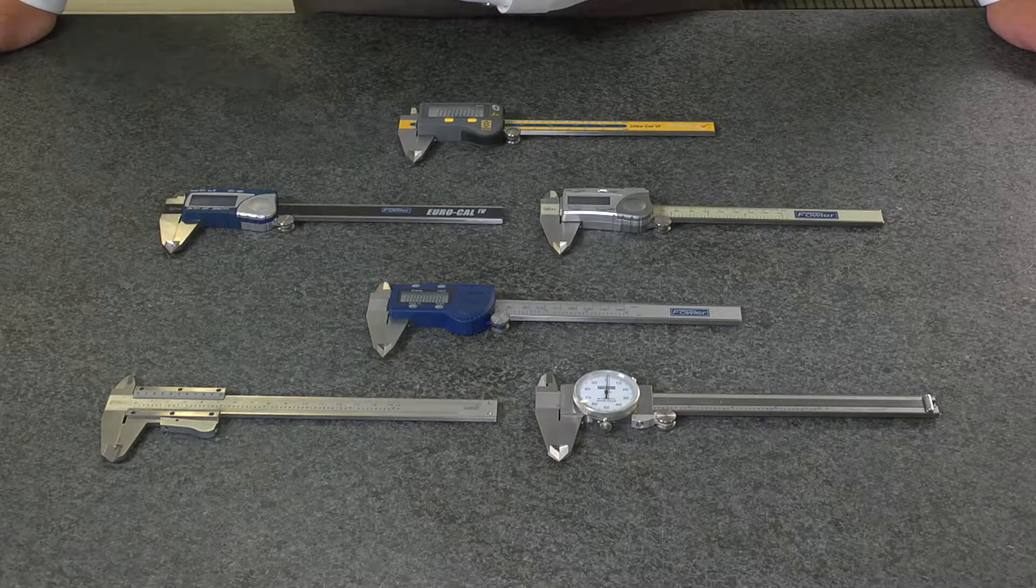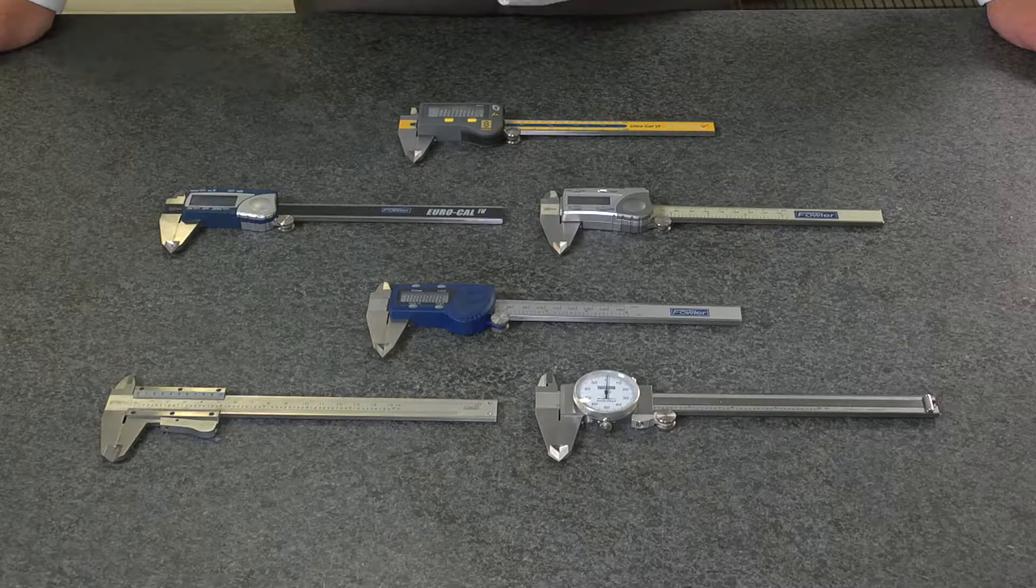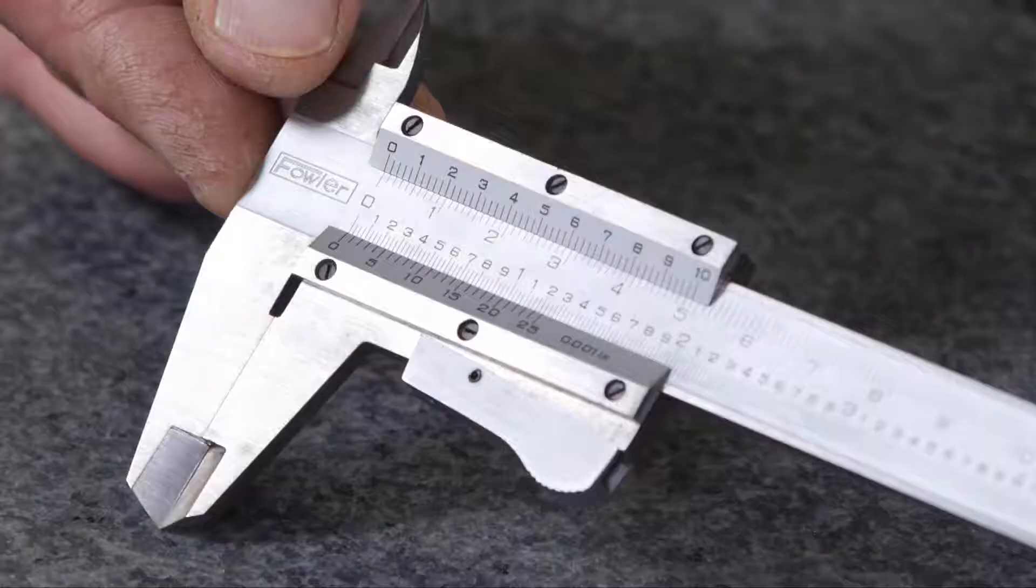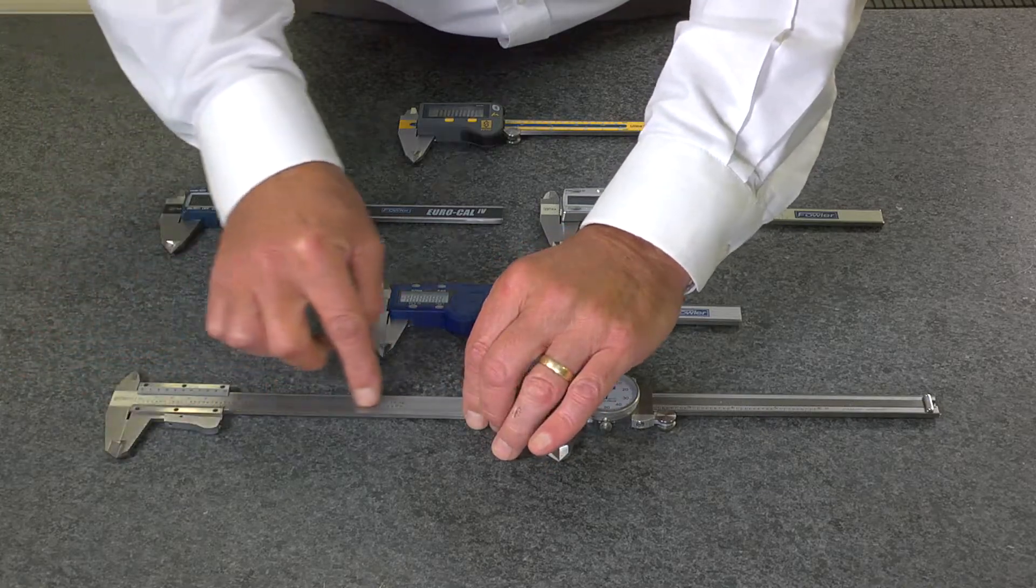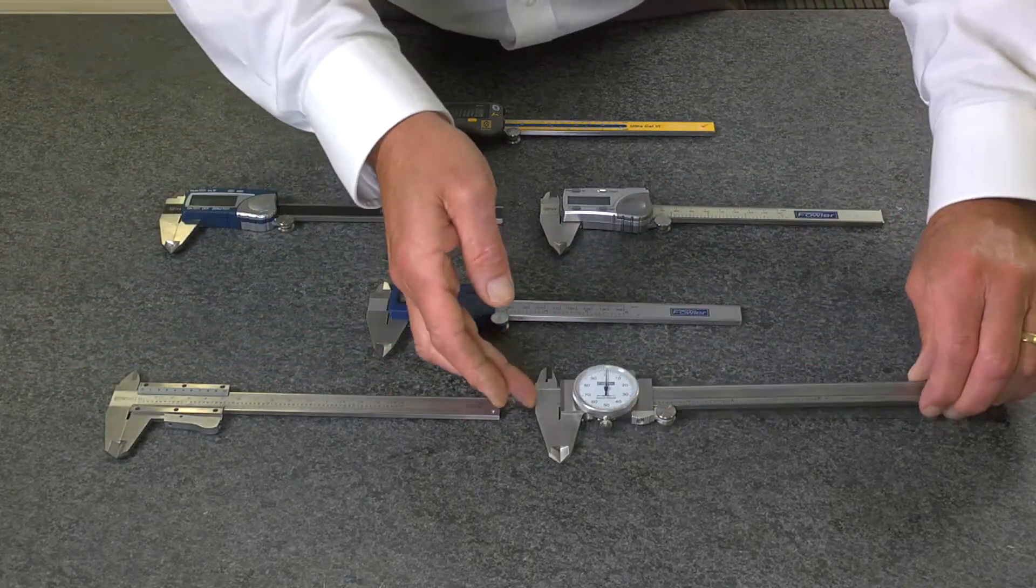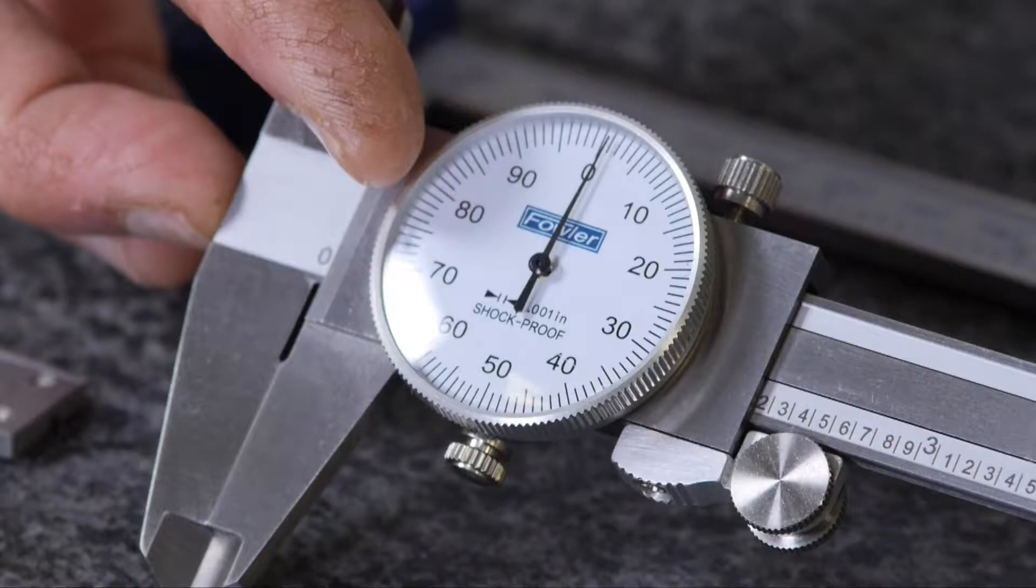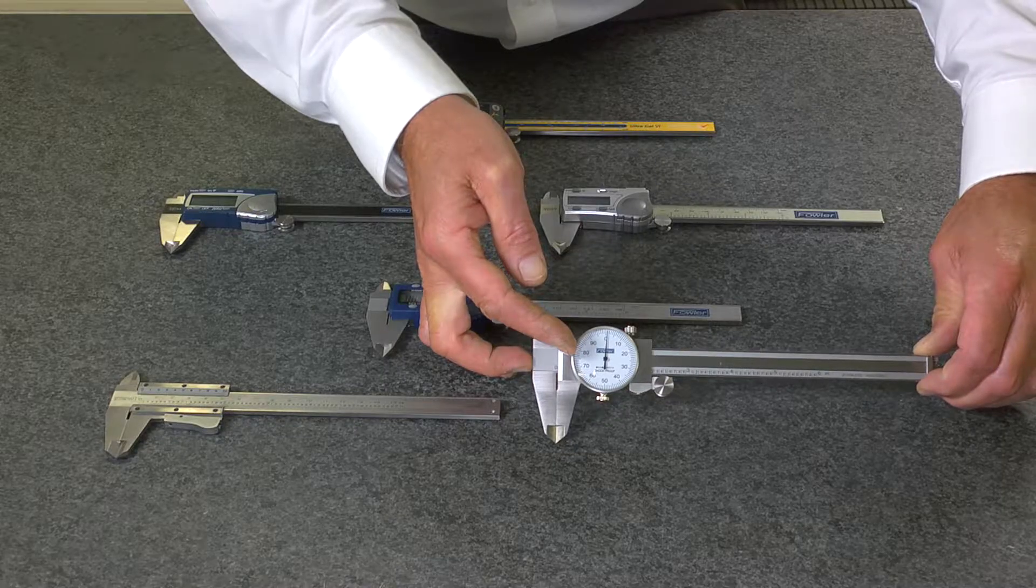Fowler offers many different styles of vernier caliper to suit your needs, from basic vernier style calipers which have the scale etched into the main beam, to dial calipers which have a dial indicator mounted that works with a rack and pinion.